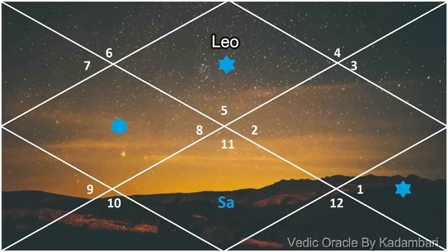Everything is not bad — as Saturn transits Shatabhisha, it helps you have better connections with the world. People coming into your life will make you aware of your worth and show you direction — how to improve your career, heal yourself, and make better plans. Saturn also aspects the 9th house — taking risks, moving forward, support through teachers and seniors, meeting talented equals, and work getting better.